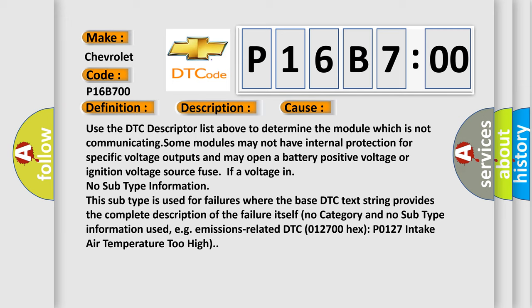No category and no subtype information used, e.g., emissions-related DTC 012700 hex P0127 intake air temperature too high.